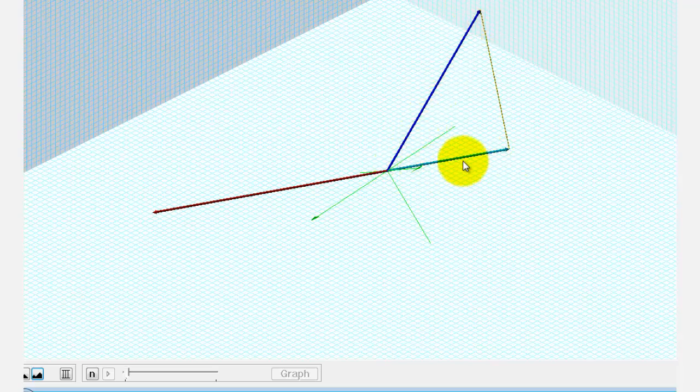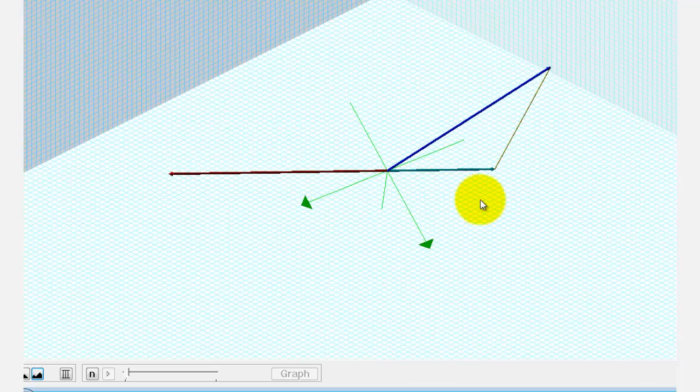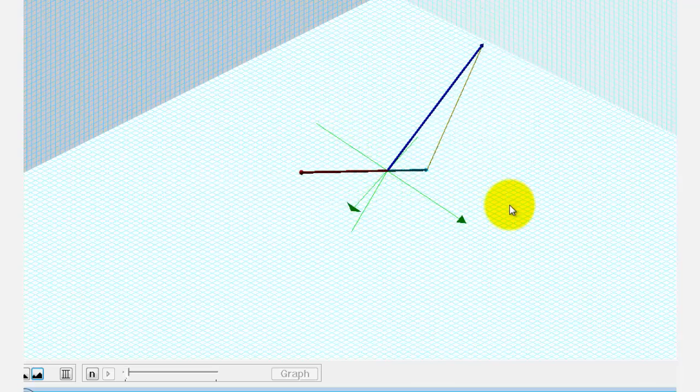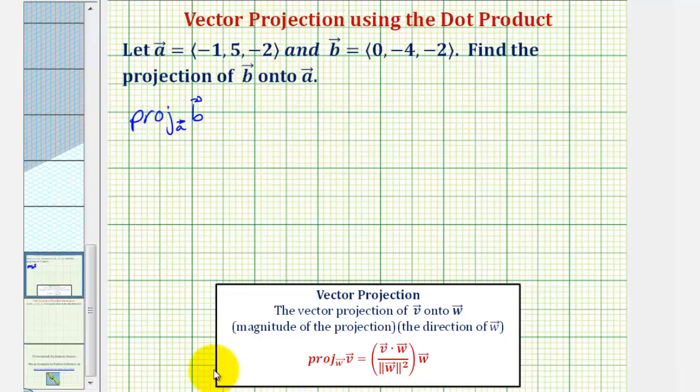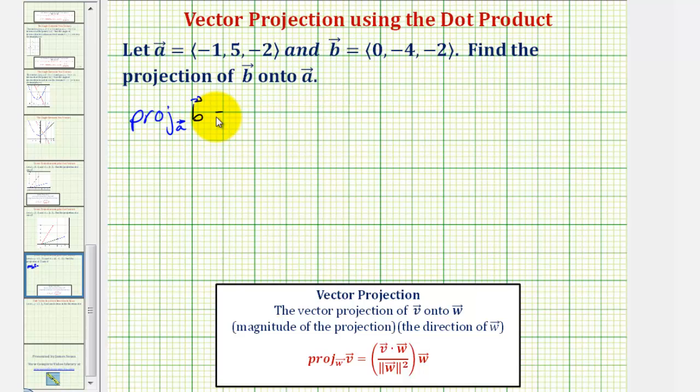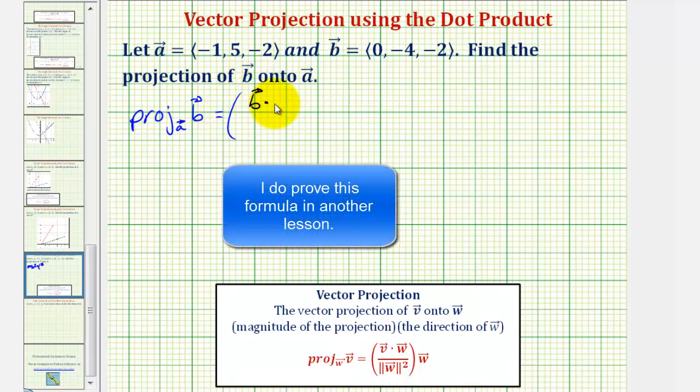Now let's go ahead and find this vector here, the projection of vector B onto vector A. This would be equal to vector B dotted with vector A divided by the magnitude of vector A squared times vector A.